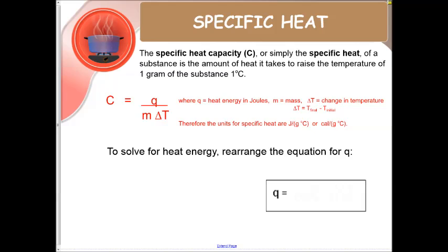M is the mass, and then delta T is the change in temperature. Now change in temperature is going to always be the final temperature minus the initial temperature. This means the units for specific heat are joules over grams times Celsius.